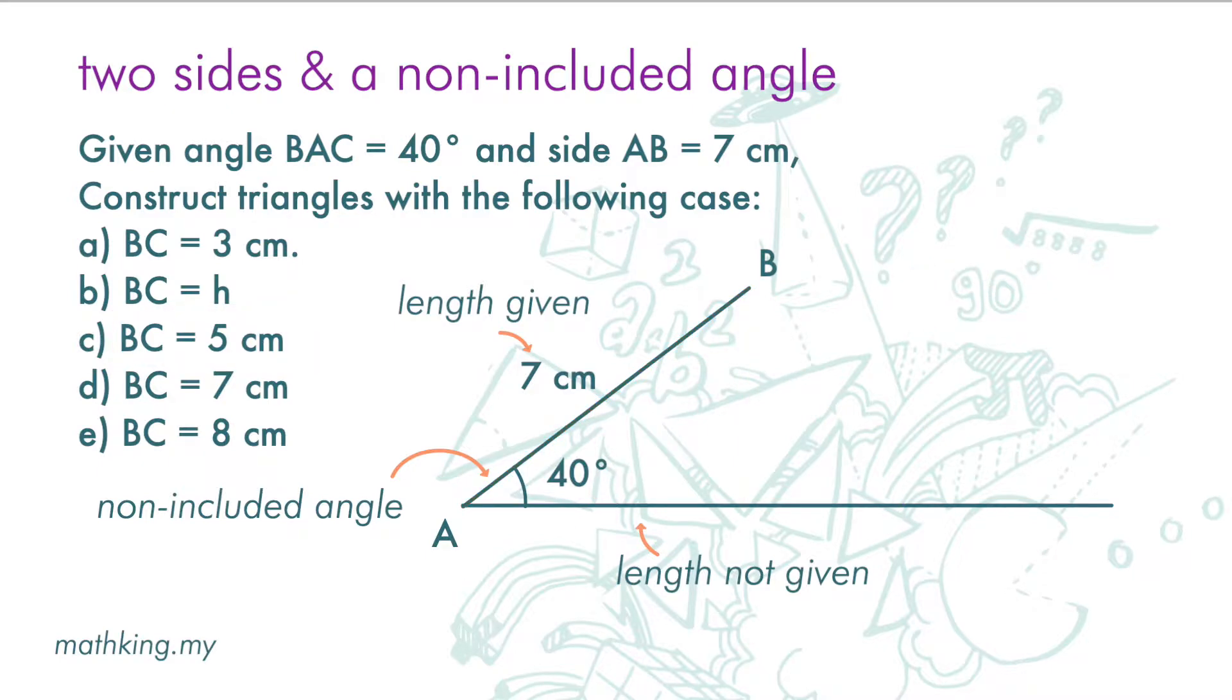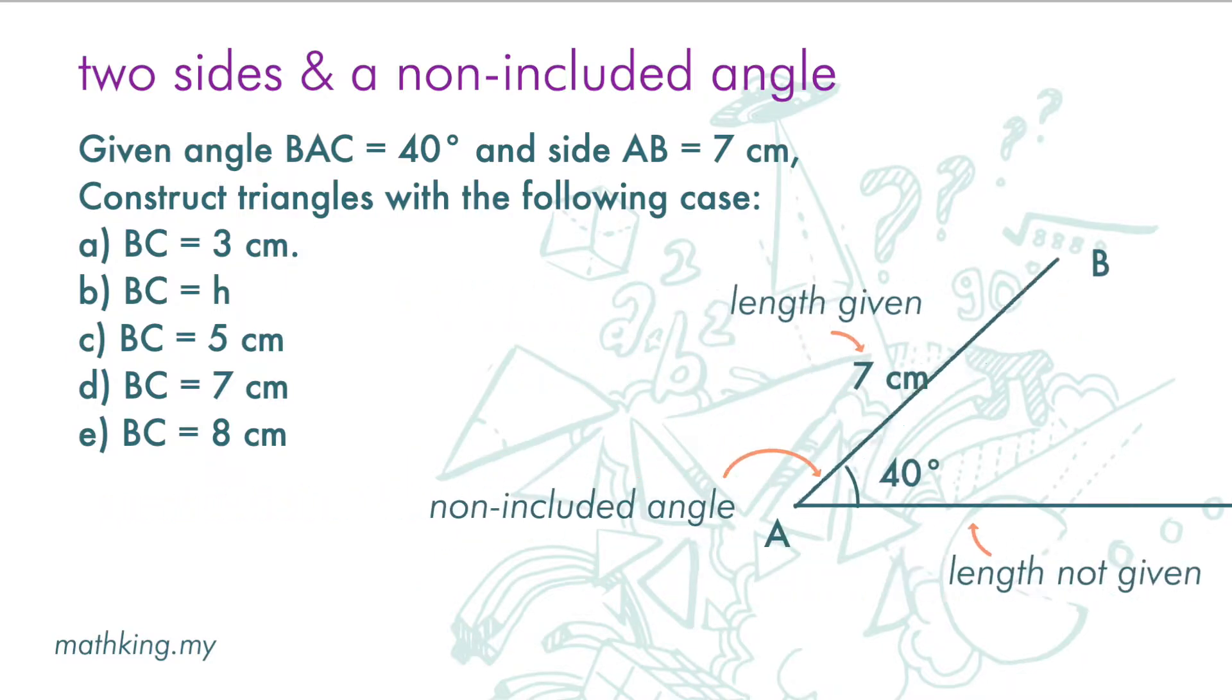One last scenario. If the non-included angle is an obtuse angle, there can also be only one triangle.